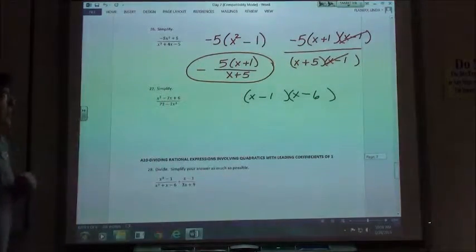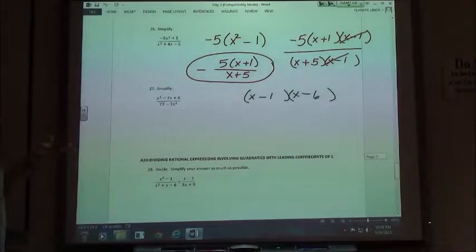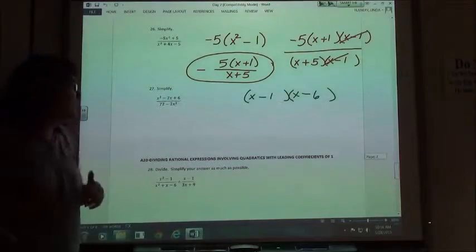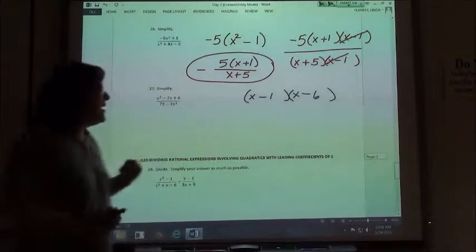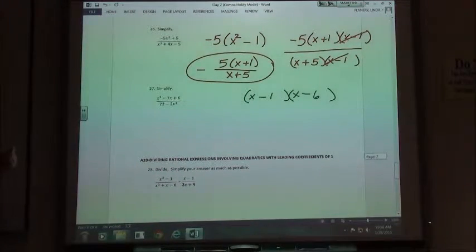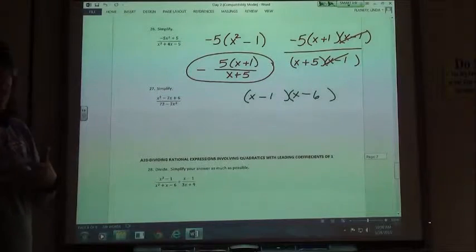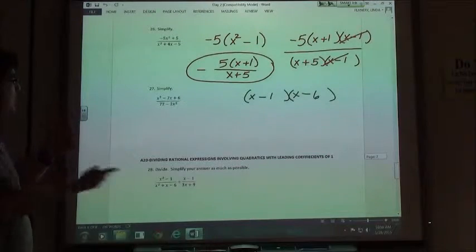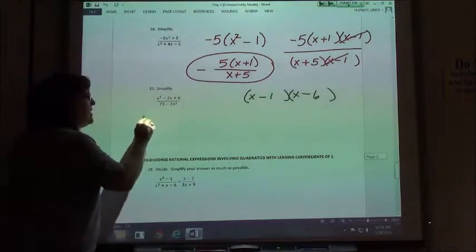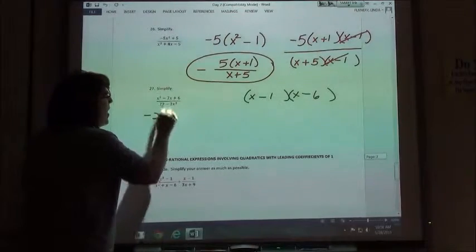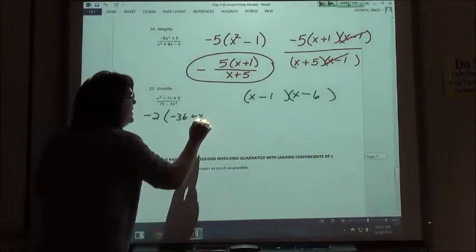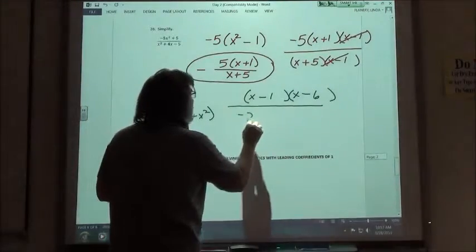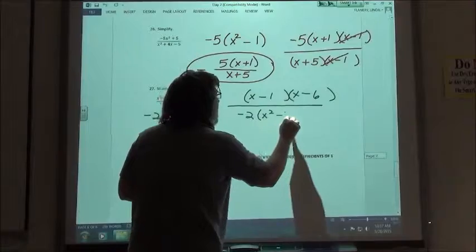On the bottom here, you have 72 minus 2x squared. Again, you can either factor out a 2 or a negative 2, but since I realize that I want to have my x's first when I factor, I want to switch that around. So the more practice you get at this, you'll say, oh, I probably should take the negative out instead of the positive so that I can flip that expression around. If I take the negative 2 out of there, I'm going to get negative 36 plus x squared, which in other words, would be negative 2 times x squared minus 36.